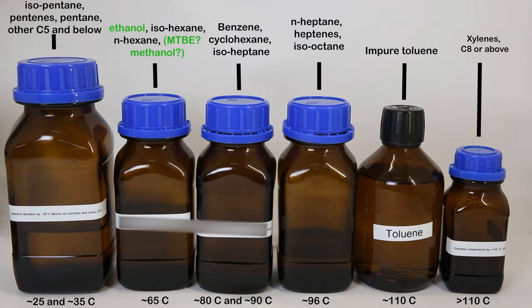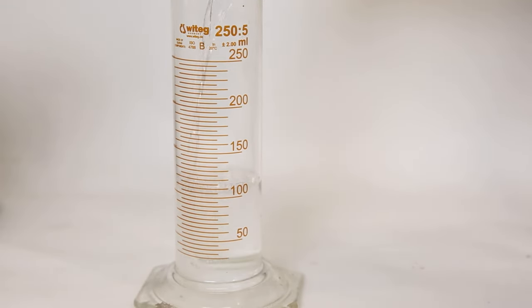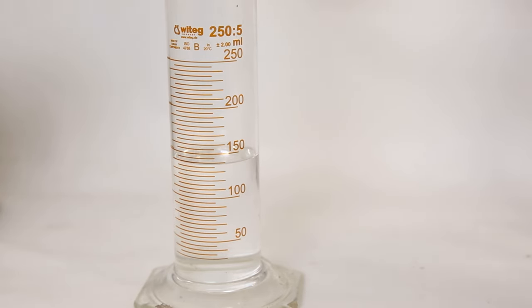But, the second fraction likely contains a lot of ethanol, and maybe some MTBE. So, I will wash it with water, and see how much of the content is actually hexanes. We can see that the total volume of the fraction before washing is 140 ml.